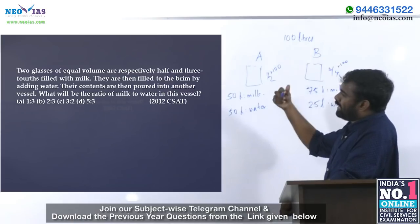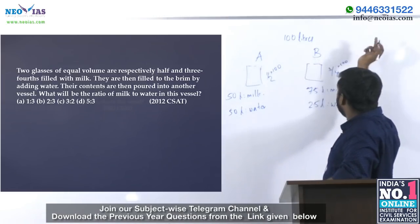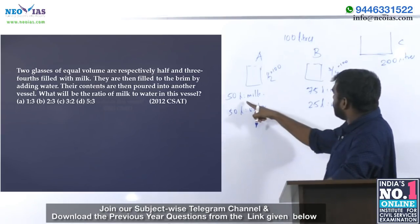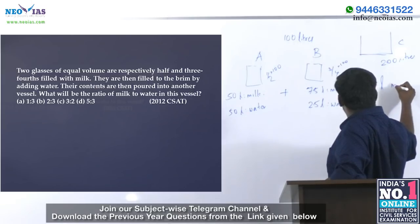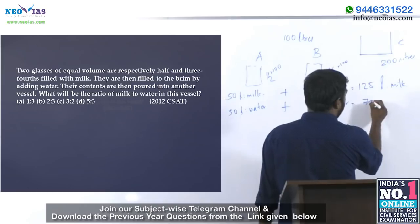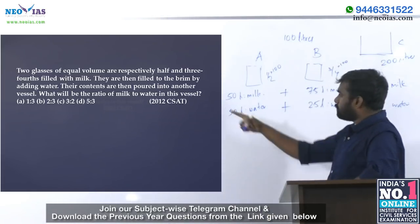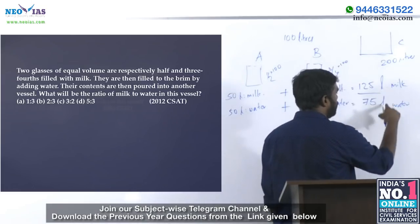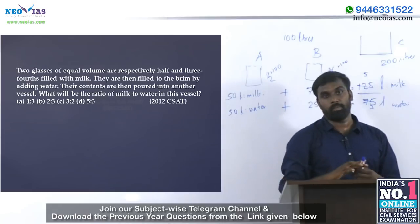After mixing, we have 50 plus 75 equals 125 liters of milk, and 50 plus 25 equals 75 liters of water. The ratio of milk to water is 125 to 75. Dividing both by 25, we get 5 is to 3. Option D is the answer.